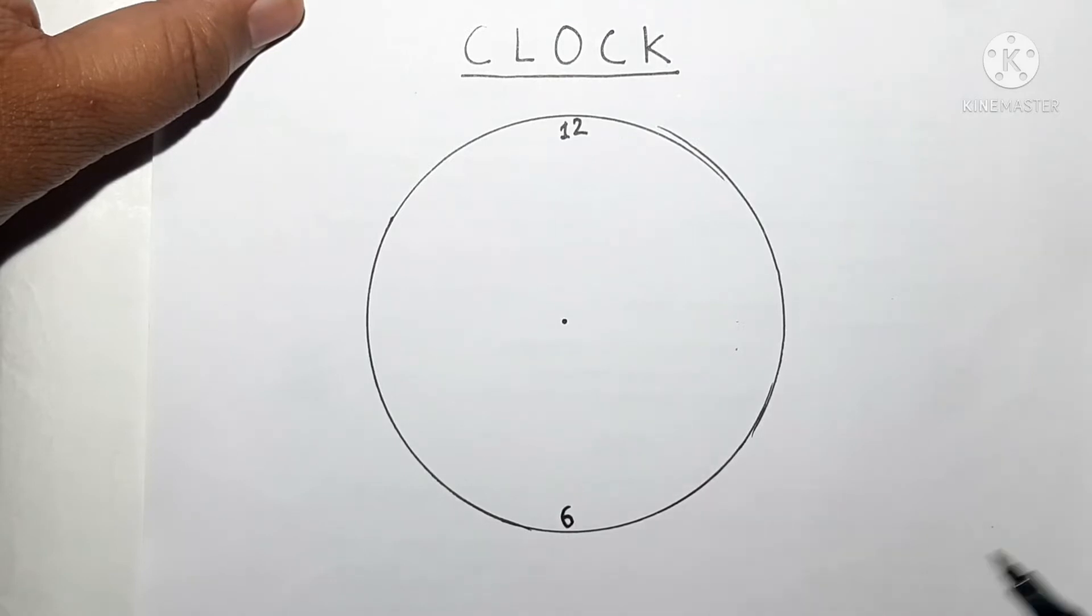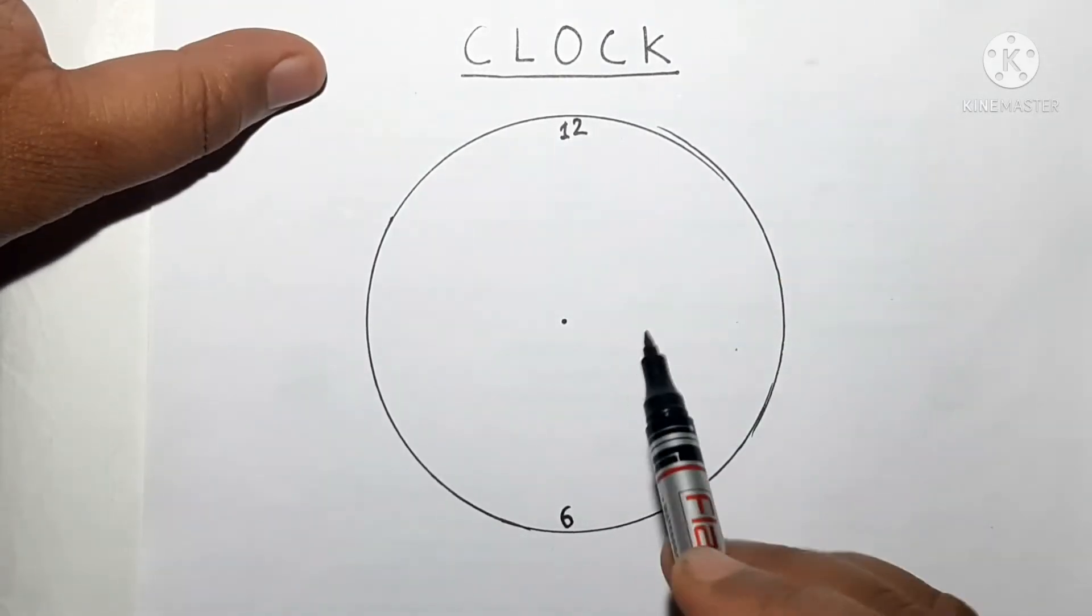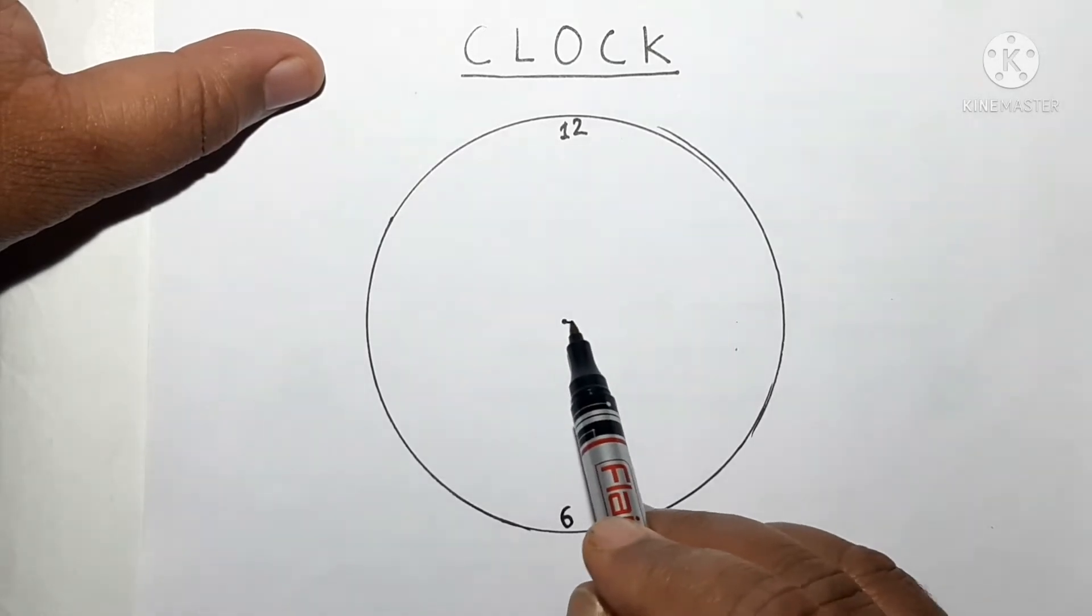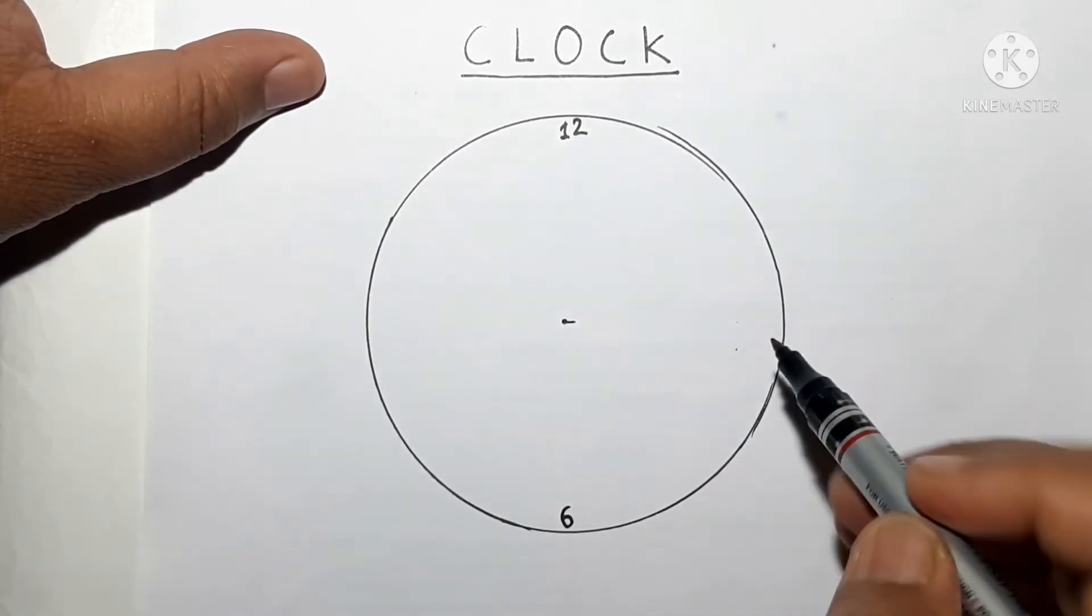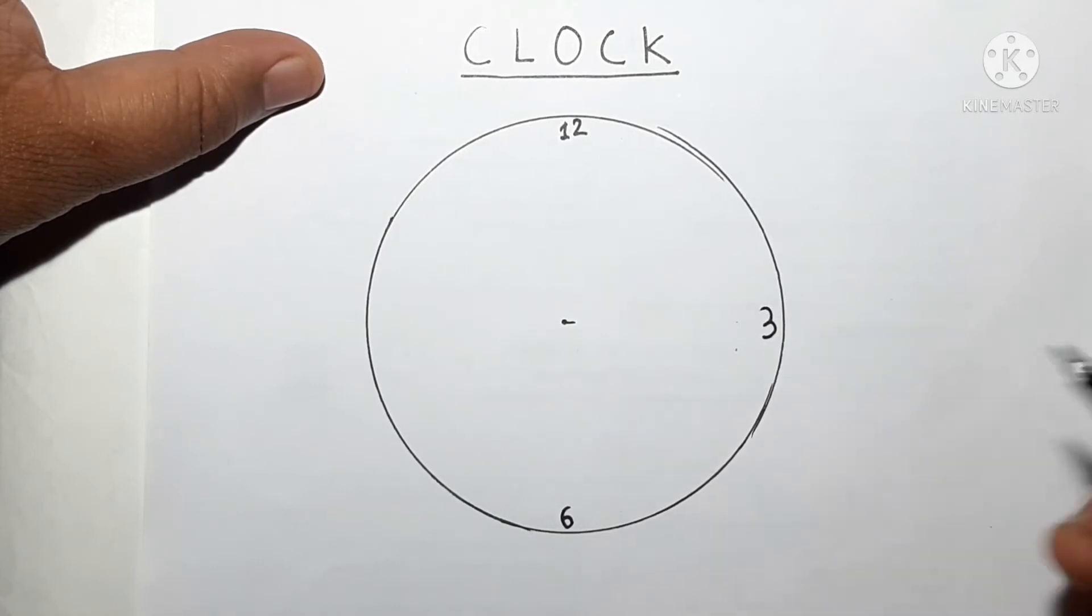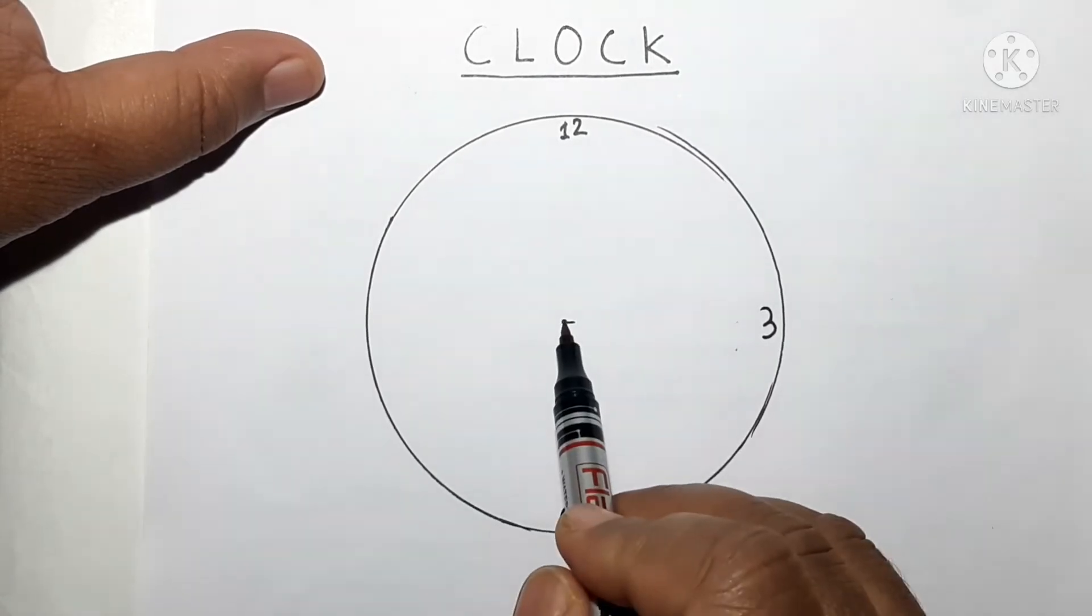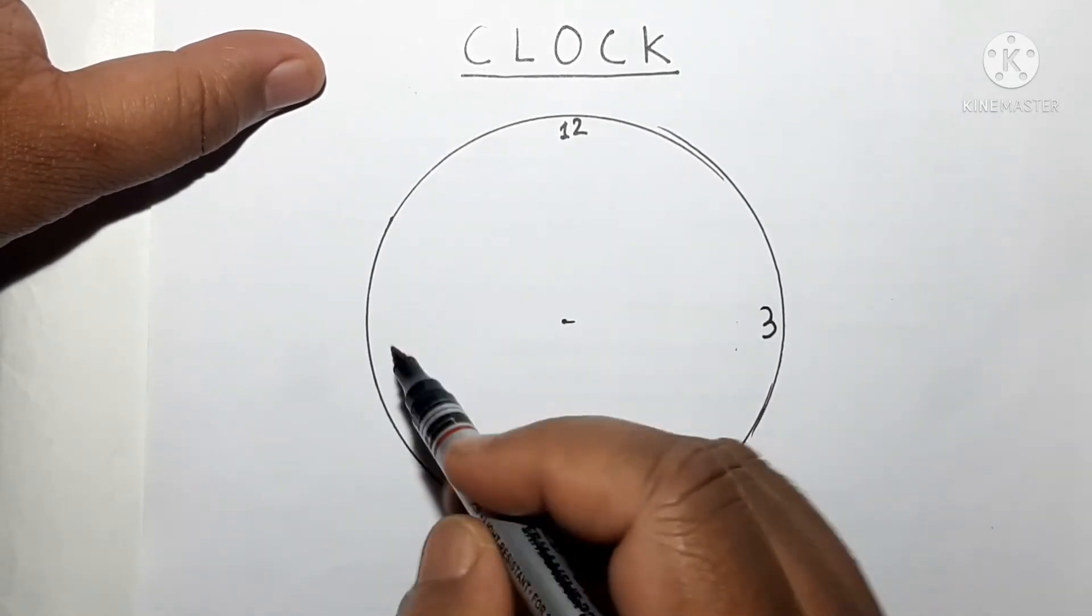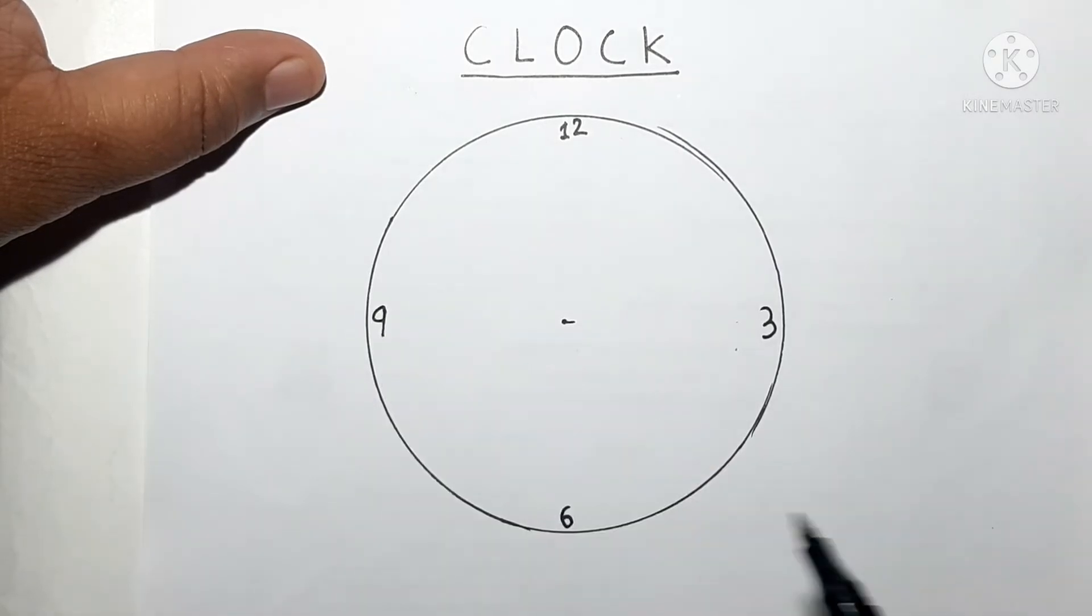Now next, just on the right side of the center you'll write here 3, and on the left side of this center you will write 9. So now I have 12, 3, 6, and 9.